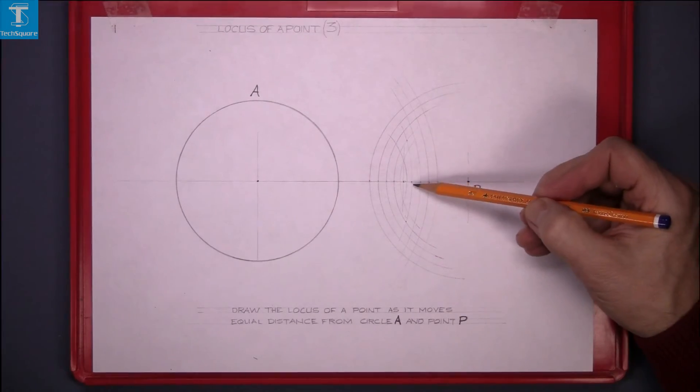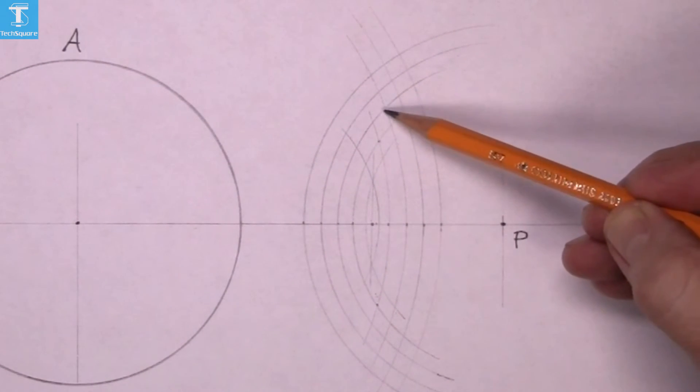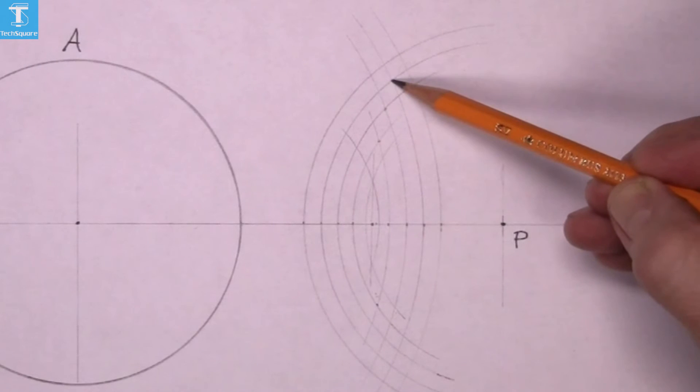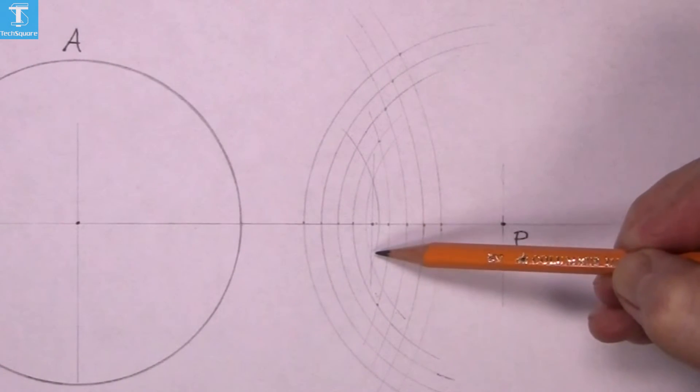Now it's a case then of deciding on the points. So we mark the points here where the circles intersect, and that's the curve there.